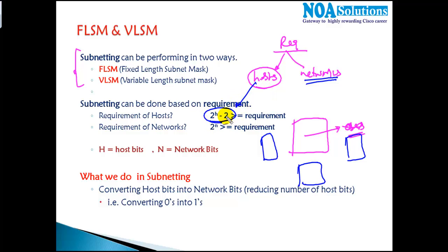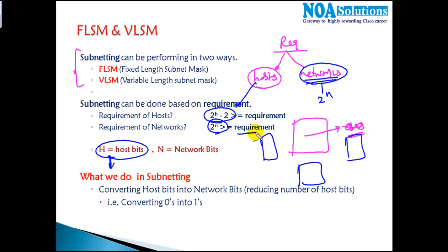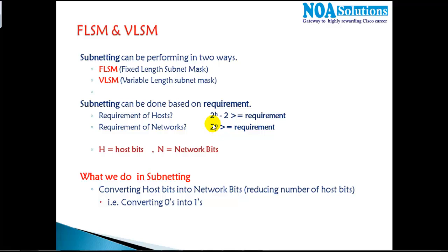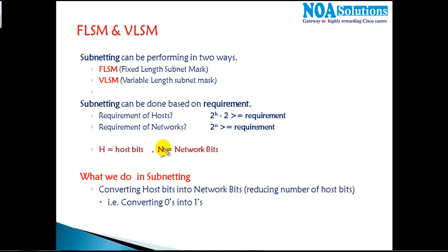If calculating based on the host requirement, use the formula: 2^H - 2 ≥ requirement, where H is your host bits. If calculating based on the network requirement, use: 2^N ≥ requirement. These are the formulas we'll use in actual calculations in the next video. In subnetting, we convert default host bits into network bits.